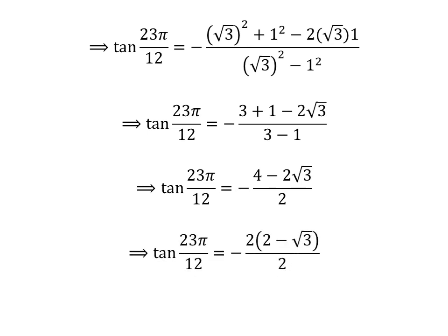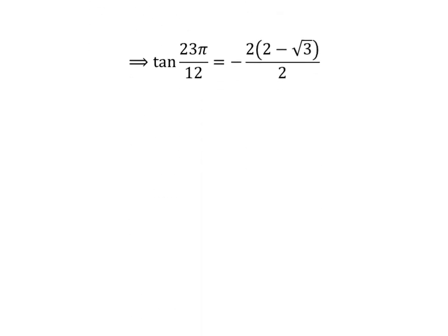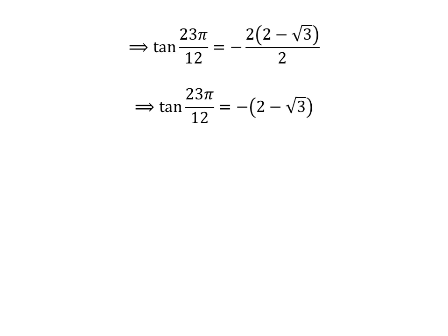Here I have taken out the common factor 2 in the numerator. Canceling out the common factor 2 in the numerator and denominator gives us tangent of 23 times pi upon 12 is equal to minus of 2 minus square root of 3. Opening up the bracket gives us tangent of 23 times pi upon 12 is equal to square root of 3 minus 2.